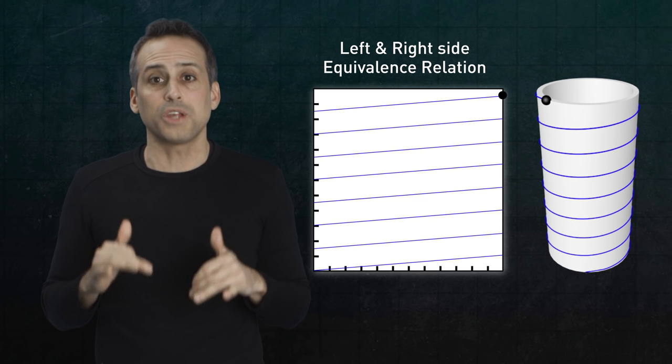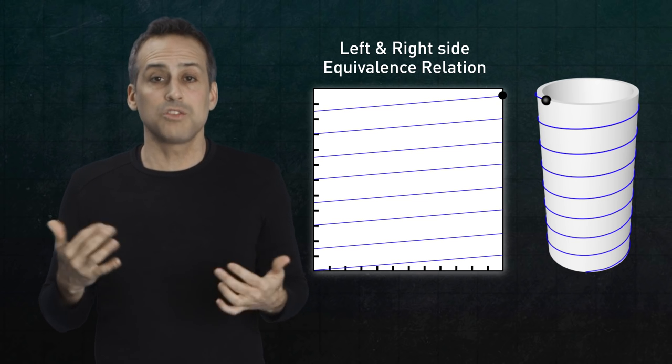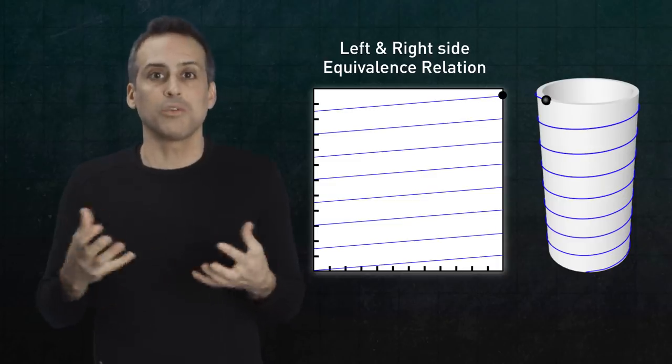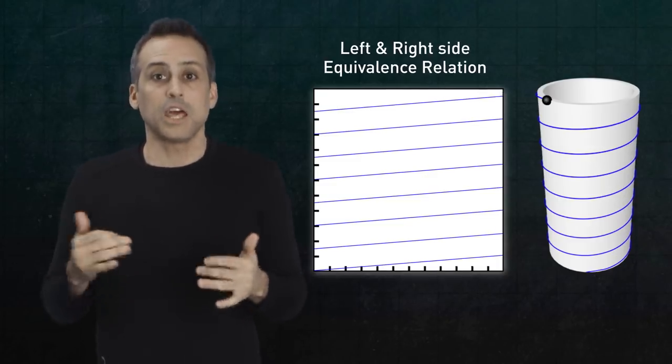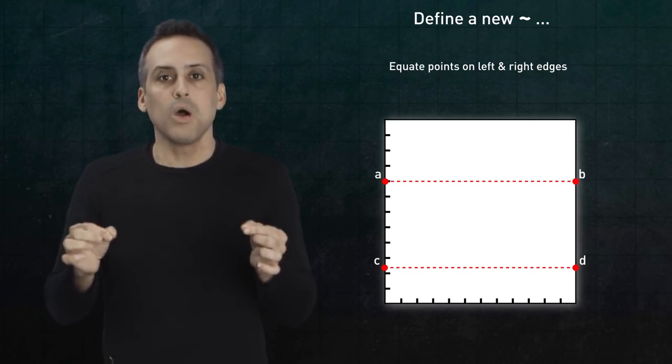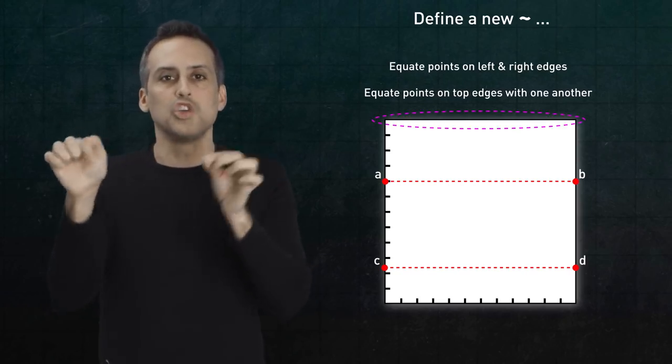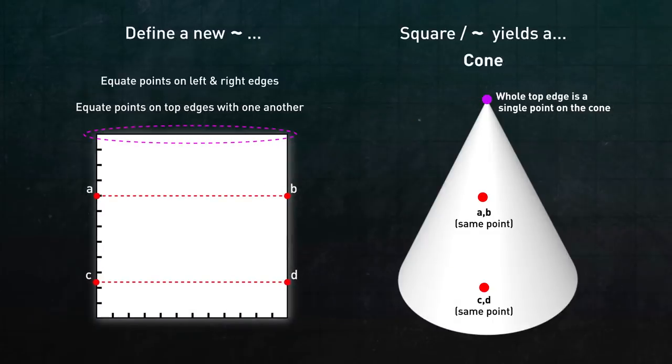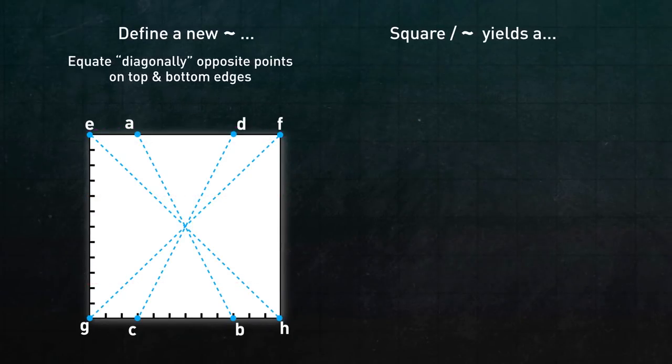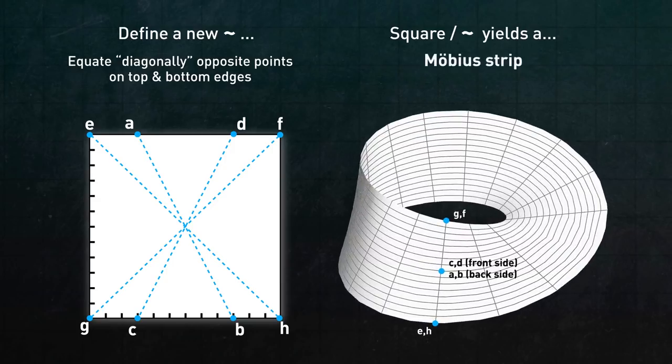Now this quotienting procedure turns out to be very general. Just change the equivalence relation, and you can build all sorts of funky shapes out of a square. For instance, say you equate opposite points on the left and right edges like before, but now equate all the points on the top edge just with one another. You get a cone. Or equate diagonally opposite points on just the top and bottom edges, and you get a Moebius strip.